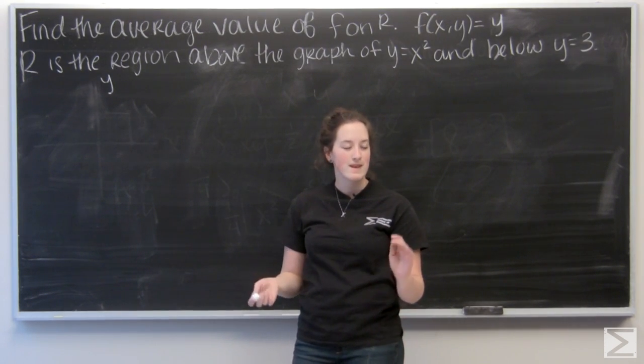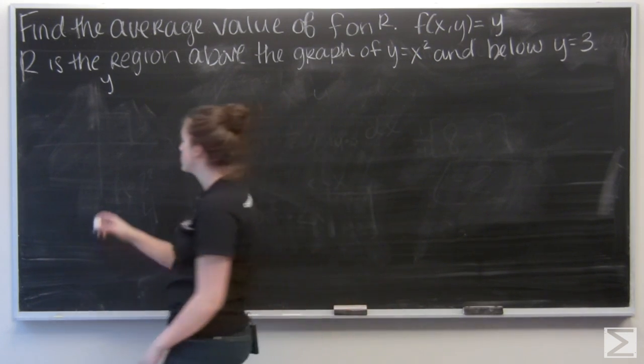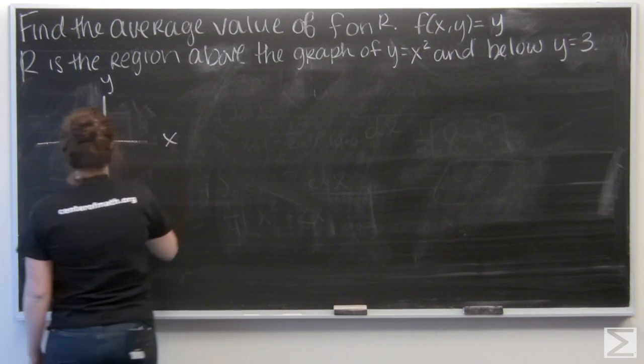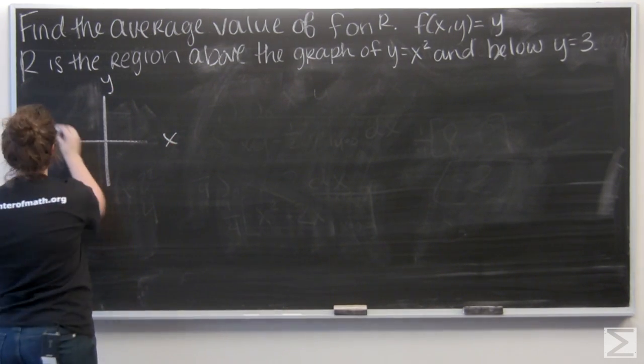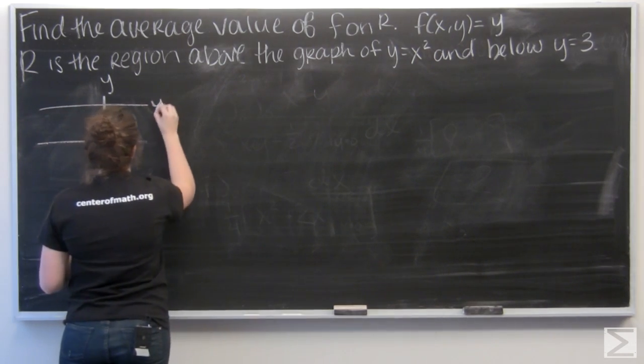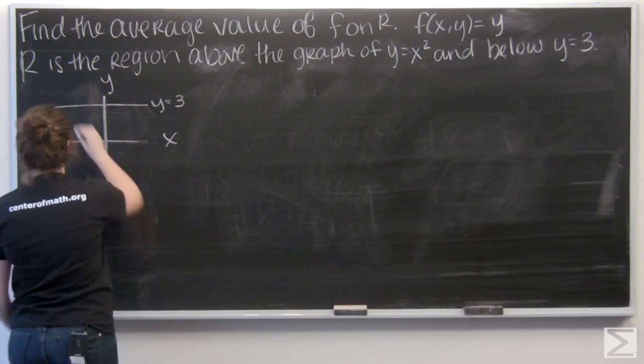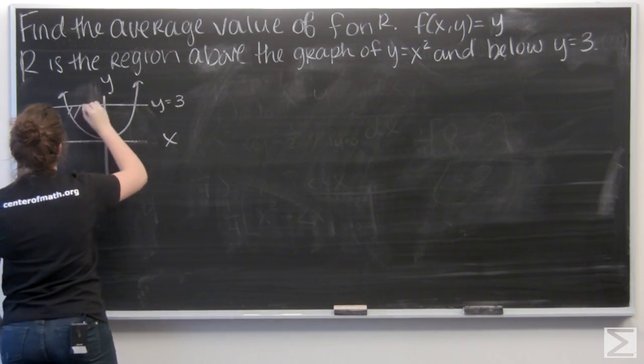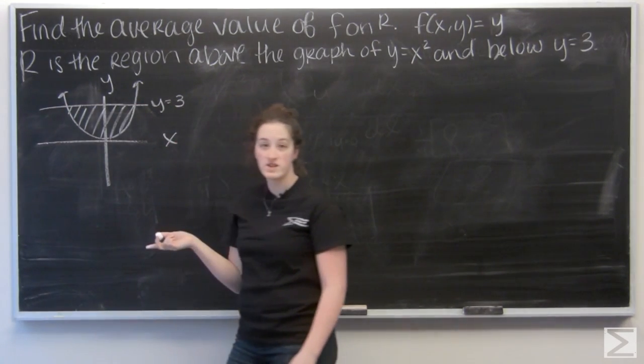It's below the line y equals 3 and above the graph of y equals x squared. So I have y equals 3 and I have y equals x squared. So I'm looking at this shaded region.